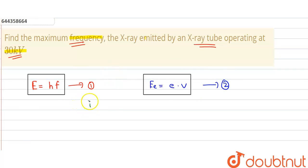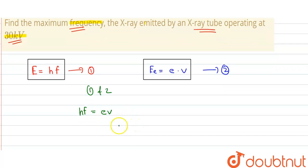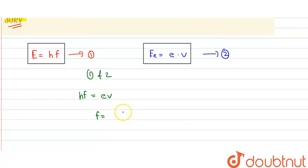From equations 1 and 2, we can say that hf = eV. Therefore, frequency f = eV/h.